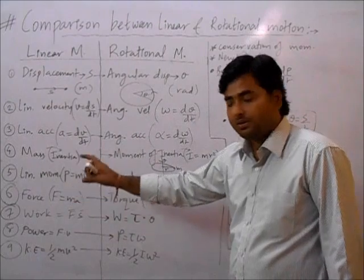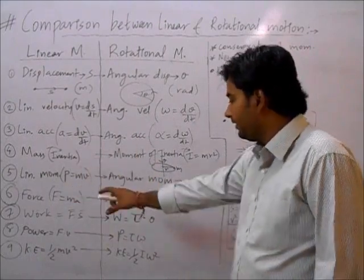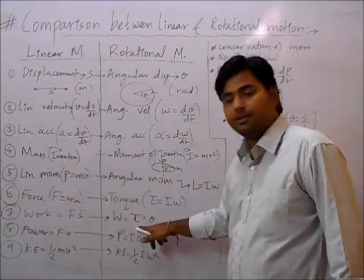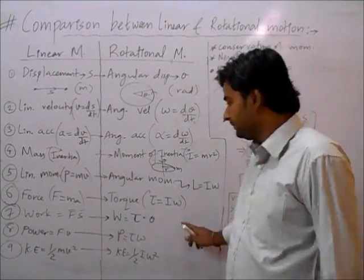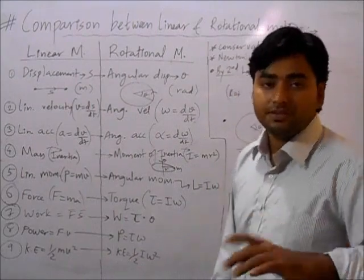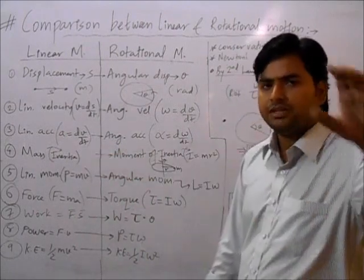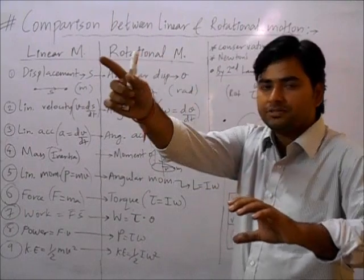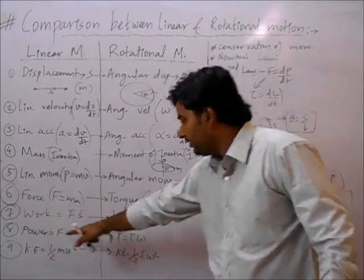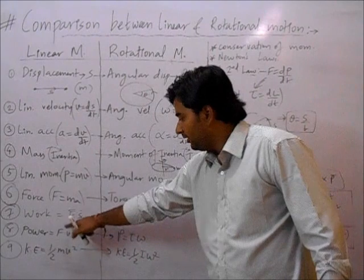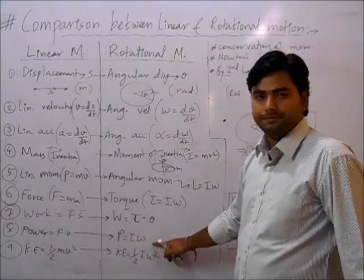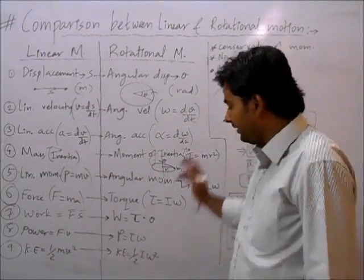Next is work. In linear motion, work = force × displacement. In rotational motion, force becomes torque and displacement becomes angular displacement theta, so work = τ × θ. For power: in linear motion, power = force × velocity. Deriving from work/time, power = τω in rotational motion.